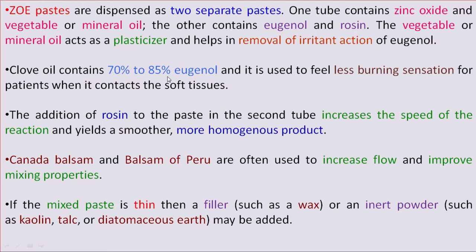Clove oil contains 70 to 85% Eugenol and is used to reduce the burning sensation for the patient when it contacts soft tissues. Addition of Rosin to the paste in the second tube increases the speed of the reaction and yields a smoother, more homogenous product. Canada Balsam and Balsam of Peru are also used, as they can increase the flow and improve mixing properties.